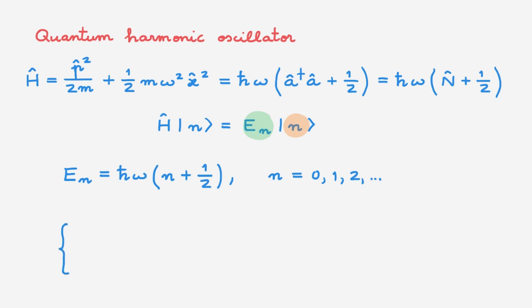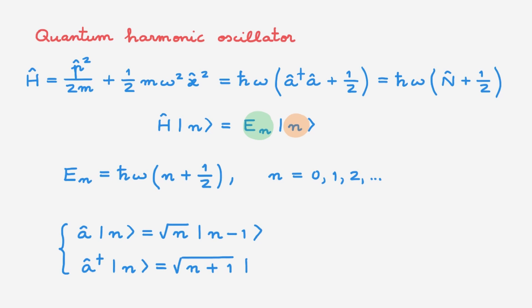The ladder operators allow us to move between eigenstates. The lowering operator A, acting on energy eigenstate n, gives another eigenstate where there is one fewer quantum of energy, and the raising operator acting on the same energy eigenstate gives another eigenstate with one extra quantum of energy. This is it for the very quick refresher, but you can find many more details in our series on the quantum harmonic oscillator that is linked in the description.